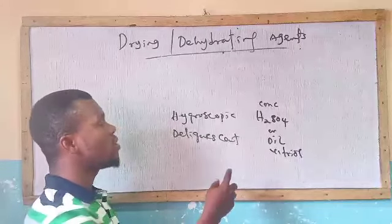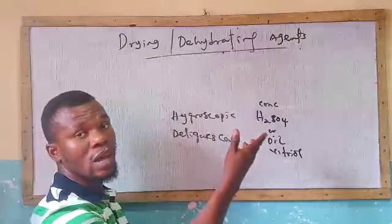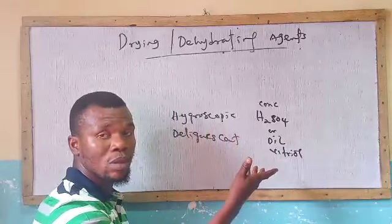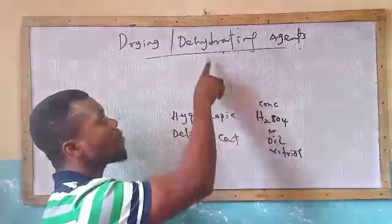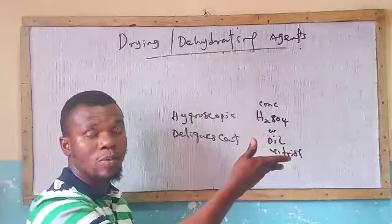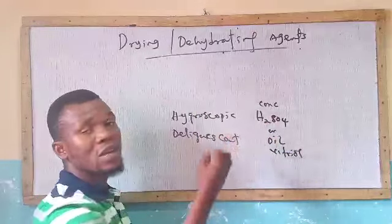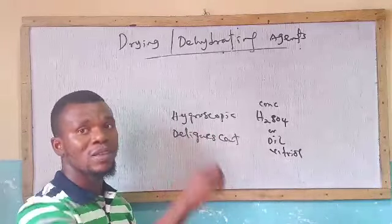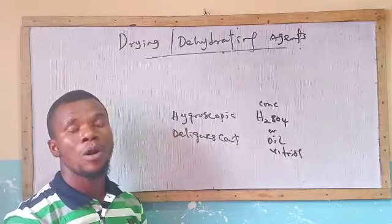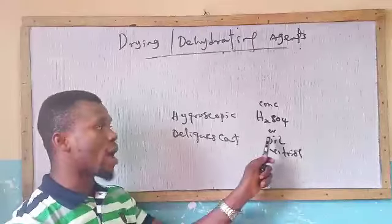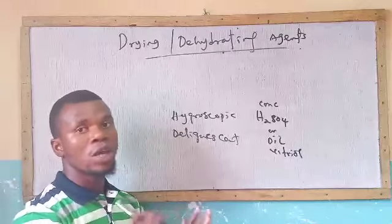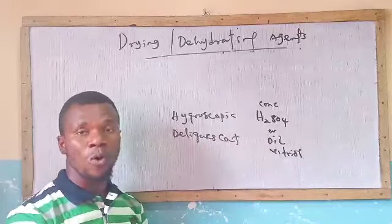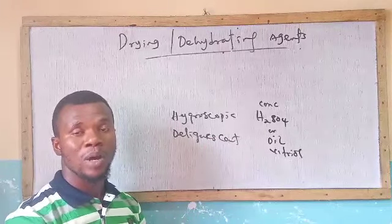As a drying agent, it has the ability to dry a substance, or dry a gas — removing moisture out of a gas. At the same time, it has the ability to dehydrate a substance. By dehydrating a substance, it means that in the process of trying to remove moisture from the substance, it will affect the physical properties. When used purely for drying using H₂SO₄, it will not affect the physical properties.